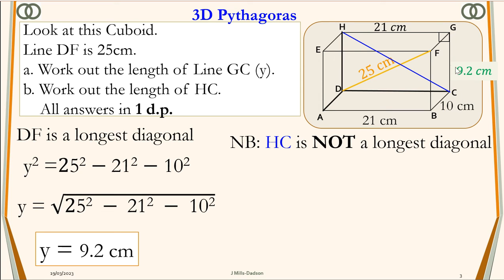HCG is a perfect right angle triangle, so that tells you it's not the longest diagonal and therefore you have to use the basic Pythagoras rule. HC is the hypotenuse, so to work out HC, HC squared is equal to 21 squared plus 9.2 all squared.